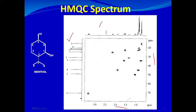Each of the contours you see in the spectrum shows a correlation between a proton and carbon. Remember, it is a one-bond hydrogen-carbon coupling, so it shows directly attached protons and carbons. Let's start with one contour and see how we can obtain information from it.